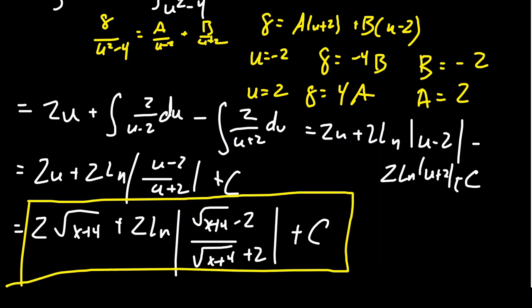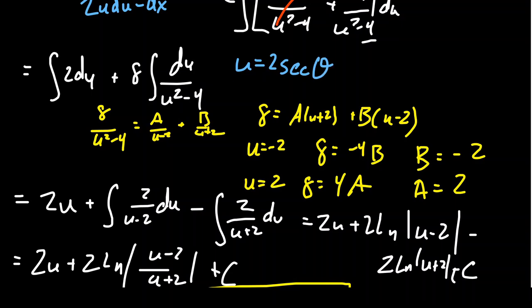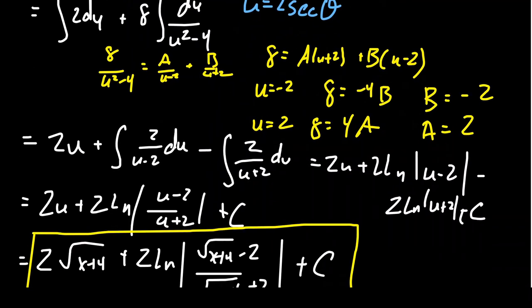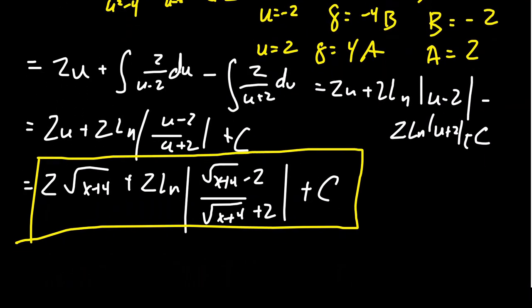If you prefer, back at the u²/(u²−4) step, you could also try a secant substitution, setting u = 2 sec θ, instead of partial fractions. When it comes to street fighting, there may be more than one valid option — use whichever method works best for you.